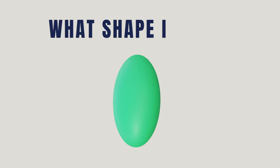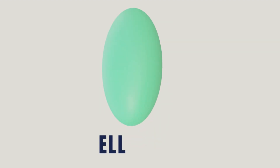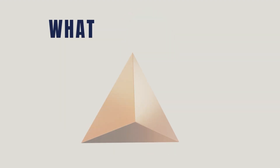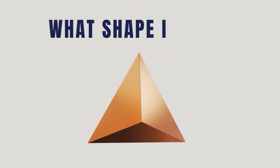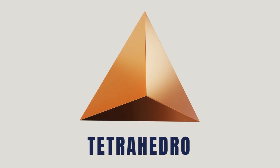What shape is this? It's an ellipsoid. What shape is this? It's a tetrahedron.